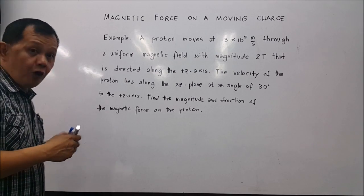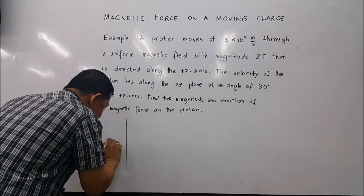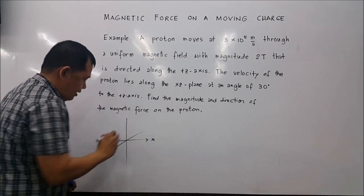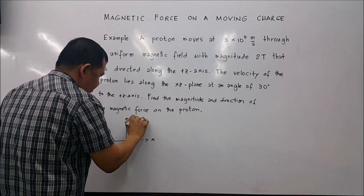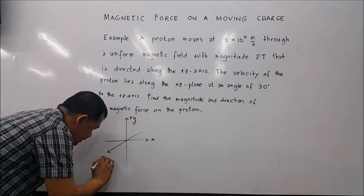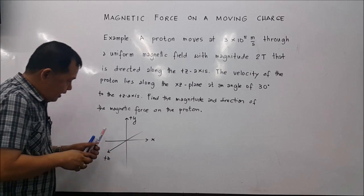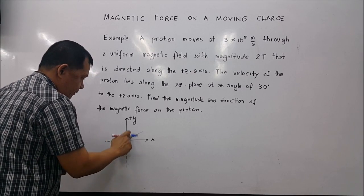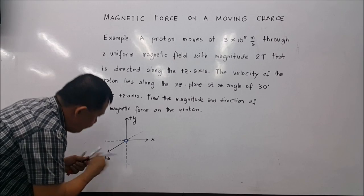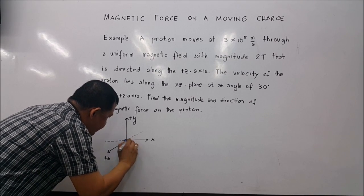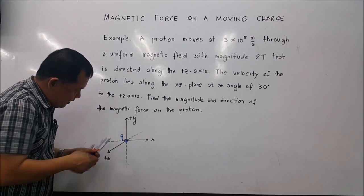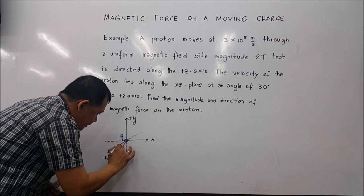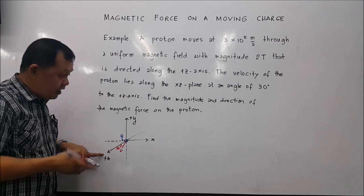First, let us draw. We have the axes — positive x, positive y, and positive z. The proton is at the origin. The velocity of the proton is directed this way, and it makes an angle of 30 degrees with the positive z-axis.